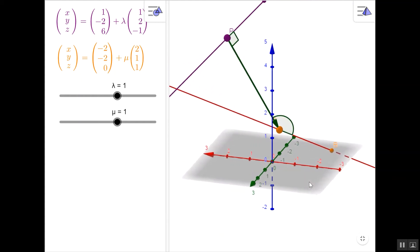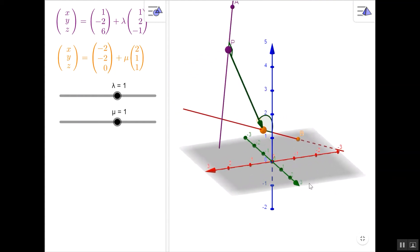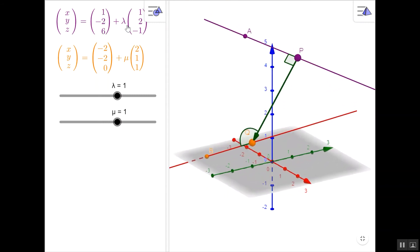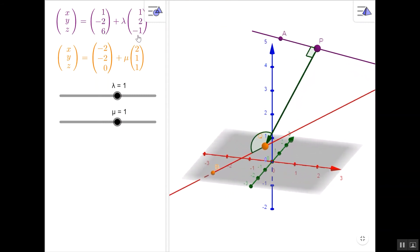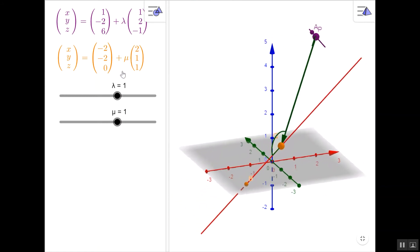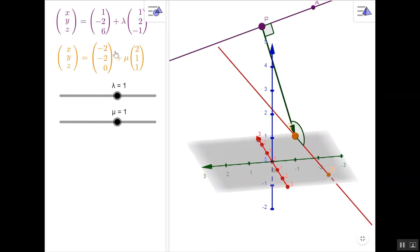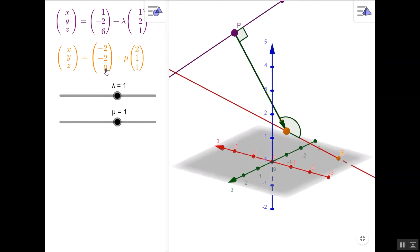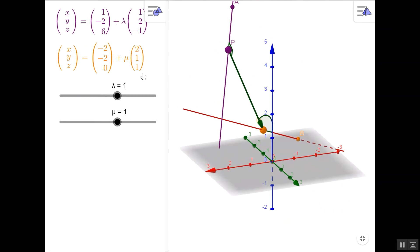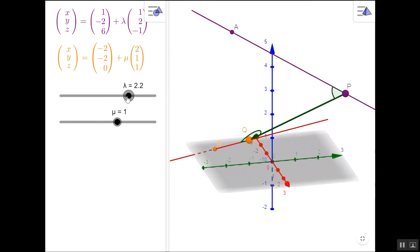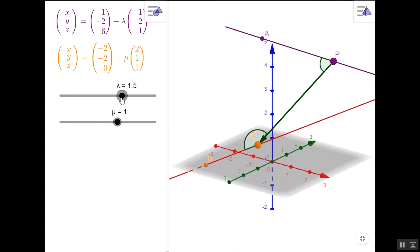Now on here, we're wanting to find the shortest distance between these two lines. The purple line that goes through the point A (1, -2, 6) with direction (1, 2, -1), and the orange line that goes to point B with position vector (-2, -2, 0) in the direction (2, 1, 1).